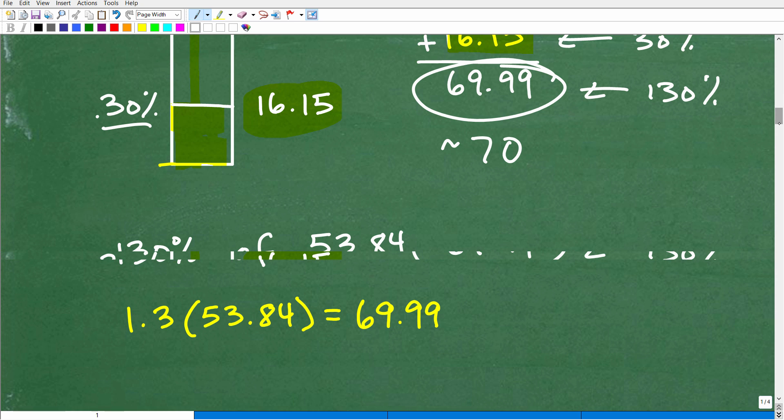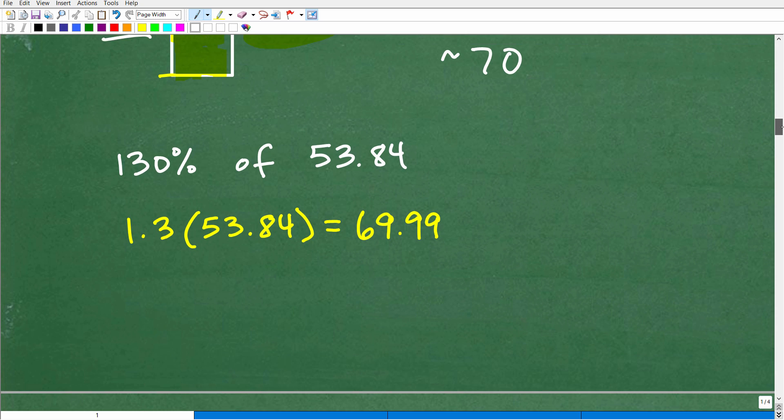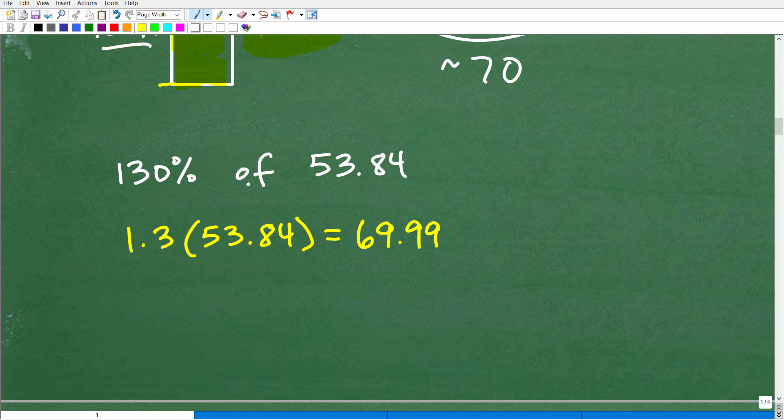But now let's go ahead and check this more directly. If I wanted to verify that 130% of 53.84, if I wanted to find an answer, remember, I'm going to take this percent and convert it to a decimal by moving the decimal point two places to the left, so that's going to be 1.3, and then I will multiply by the number I'm trying to find a percent of. So 130%, 53.84 is 1.3 times 53.84, and guess what you get in your calculator? 69.99, which, again, effectively is 70. So it checks out.